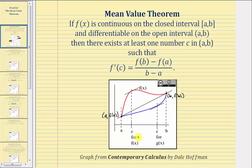To better understand what this is telling us, let's look at the graph below. If we consider these two functions on the closed interval from a to b, notice how the left endpoint would be the ordered pair a comma f of a, and the right endpoint would be the ordered pair b comma f of b. And therefore, this quotient here would be the slope of this secant line.